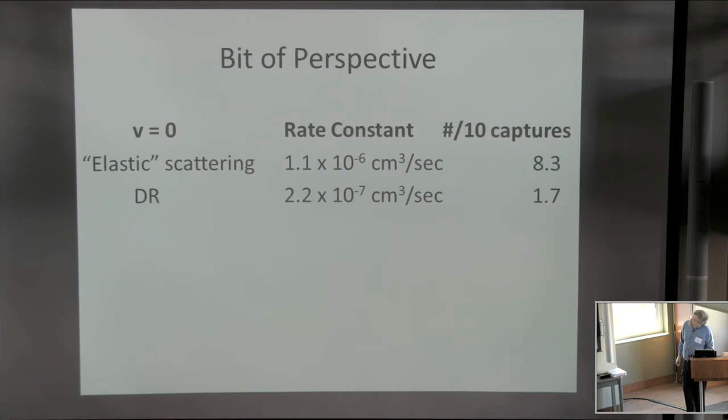And last, I want to end on a bit of perspective which has a little bit to do with the question I asked Christian at the end of his talk. In the calculations, one automatically calculates the elastic scattering cross-section for dissociative recombination. This is not the Coulomb scattering cross-section, which is infinite, but this is the cross-section for coming in, being captured by dissociative state, rattling around, and then being thrown back out. That cross-section is very high, 1×10^-6 cm³/sec. So we can easily calculate the number of captures out of every 10 or whatever that lead to dissociative recombination.